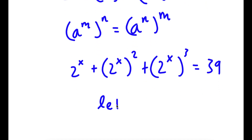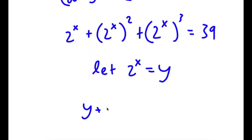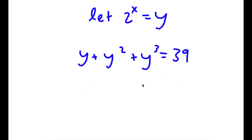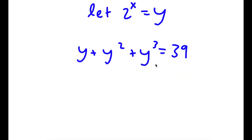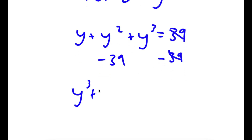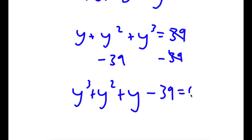Now I'm going to let 2 to the power of x equal the variable y. So now I have y plus y squared plus y to the power of 3 is equal to 39. I'm going to subtract 39 on both sides, so now I have y to the power of 3 plus y squared plus y minus 39 is equal to 0.